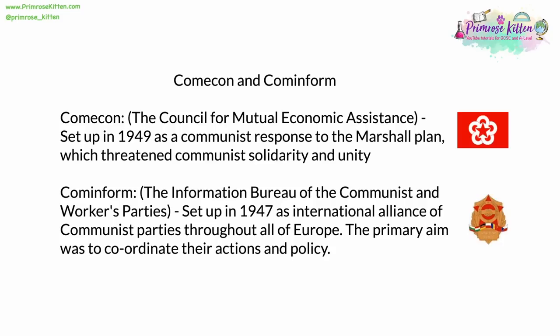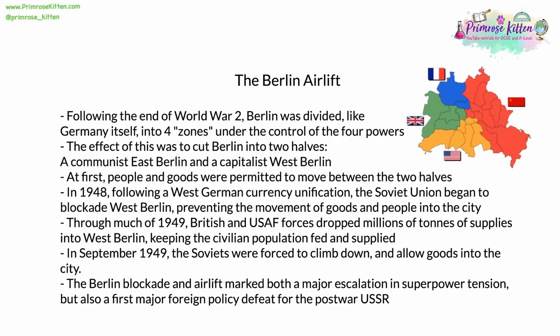As we have already seen, at the end of World War II Germany was divided into four zones, each one under the control of one of the victorious Allied powers: France, the United Kingdom, the United States, and the Soviet Union. The same applied to Berlin, which was also divided into four zones. However, the effect of this was to cut Berlin in half into a communist East Berlin and a capitalist West Berlin. Initially, following the end of the war, both people and goods were permitted to move freely between the two halves of Berlin.